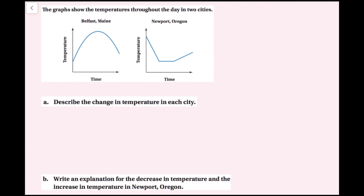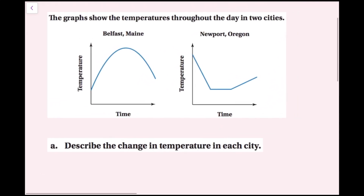For Example 1, the graph shows the temperatures throughout the day in two cities: Belfast, Maine and Newport, Oregon. I'm going to zoom in on the graphs. Part A says to describe the change in temperature in each city. For Belfast, Maine, the temperature starts low at the beginning of the day, and as time goes on it's increasing, but that rate of increase is slowing down until we reach the highest temperature sometime in the middle of the day. Then it starts to decrease slowly, and closer to nighttime the temperature starts falling at a faster rate.